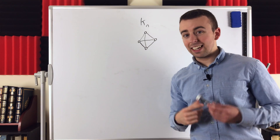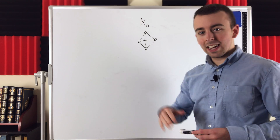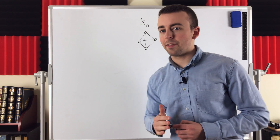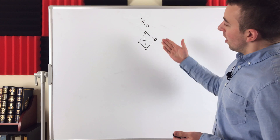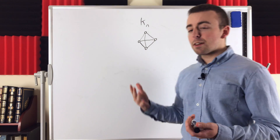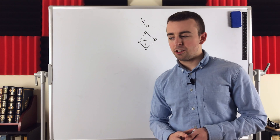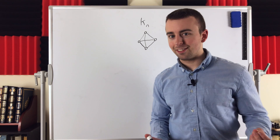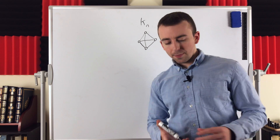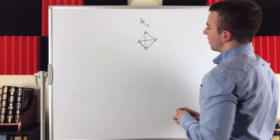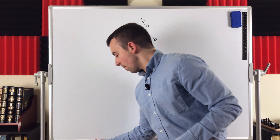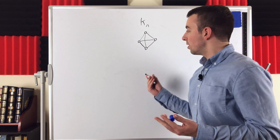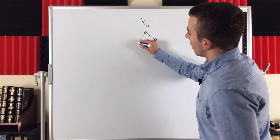How many edges can a graph possibly have? The maximum number is the number of edges that a complete graph has. With graphs like this, where every pair of vertices is joined by an edge, you might think we could find a formula for the number of edges based on the number of vertices — and of course, we can. What defines an edge? Well, you need two vertices — two endpoints — and the order doesn't matter.